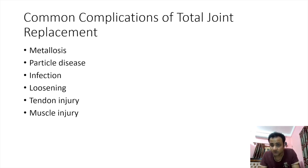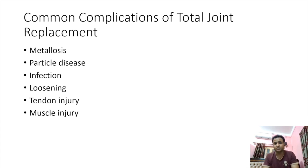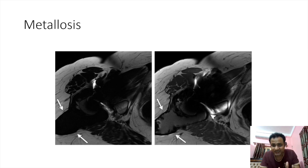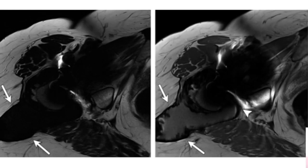Now one of the most important parts of this presentation: what are the complications to be careful about when dealing with a patient who has undergone prosthesis placement? The most common complications are metallosis, particle disease, infection, loosening, tendon injury, and muscle injury. This is an example of metallosis, where a lobulated T2 hypointense lesion or structure is seen adjacent to the joint, with hypointense components lining the lobulated cavity — a typical example of metallosis.